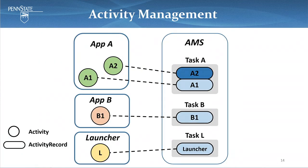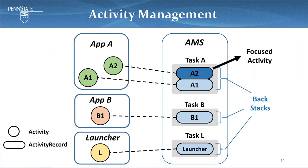All activities in the system are managed by Activity Manager Service, or AMS. Activities are organized into tasks — a task is a collection of activities that you would have interacted with in a previous job, and they are ordered into a stack called the back stack, in the order each activity is opened, so the user can go back to the previous activity once the current is finished. There is one foreground activity in the system at one time, called the focus activity.